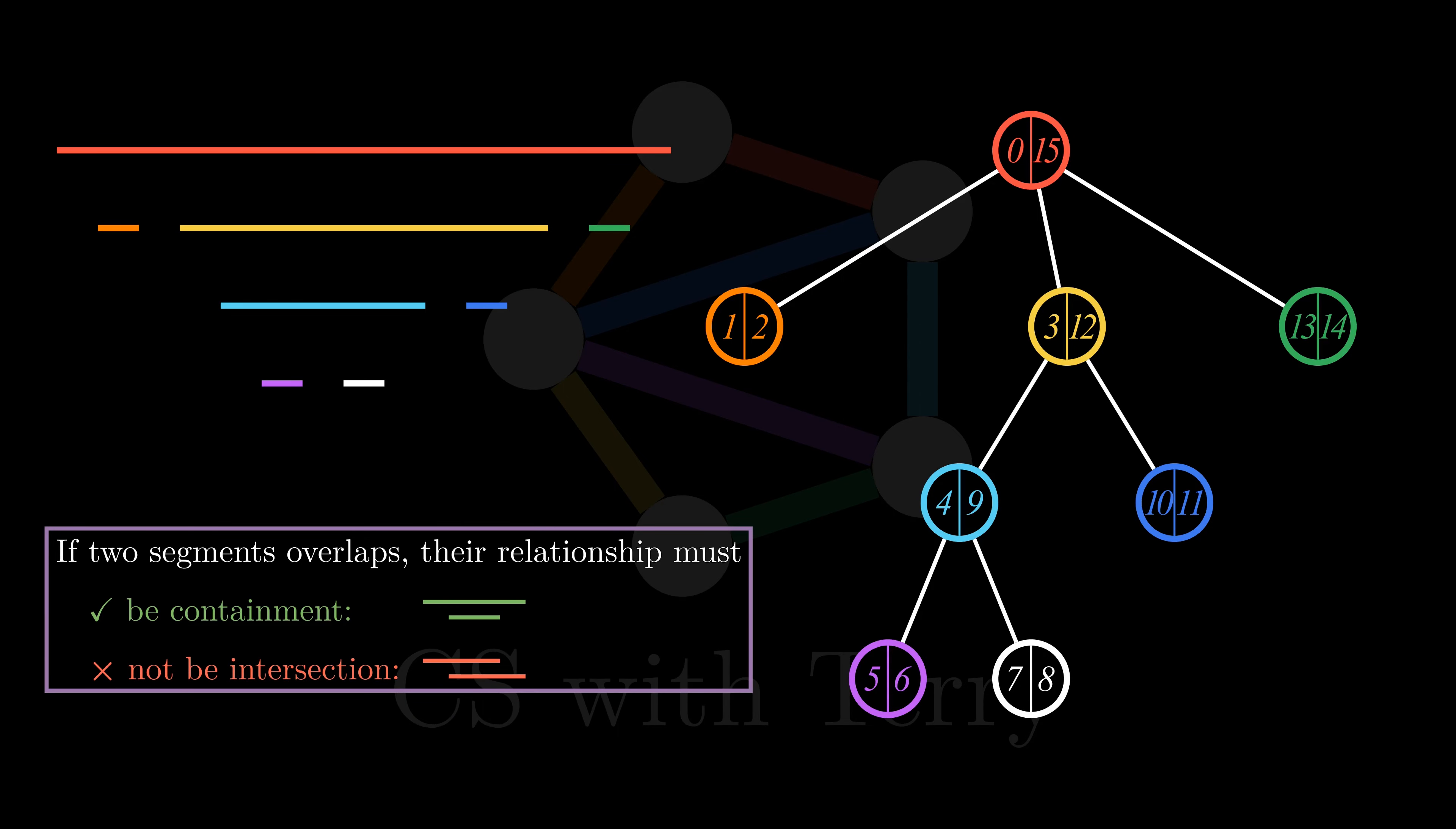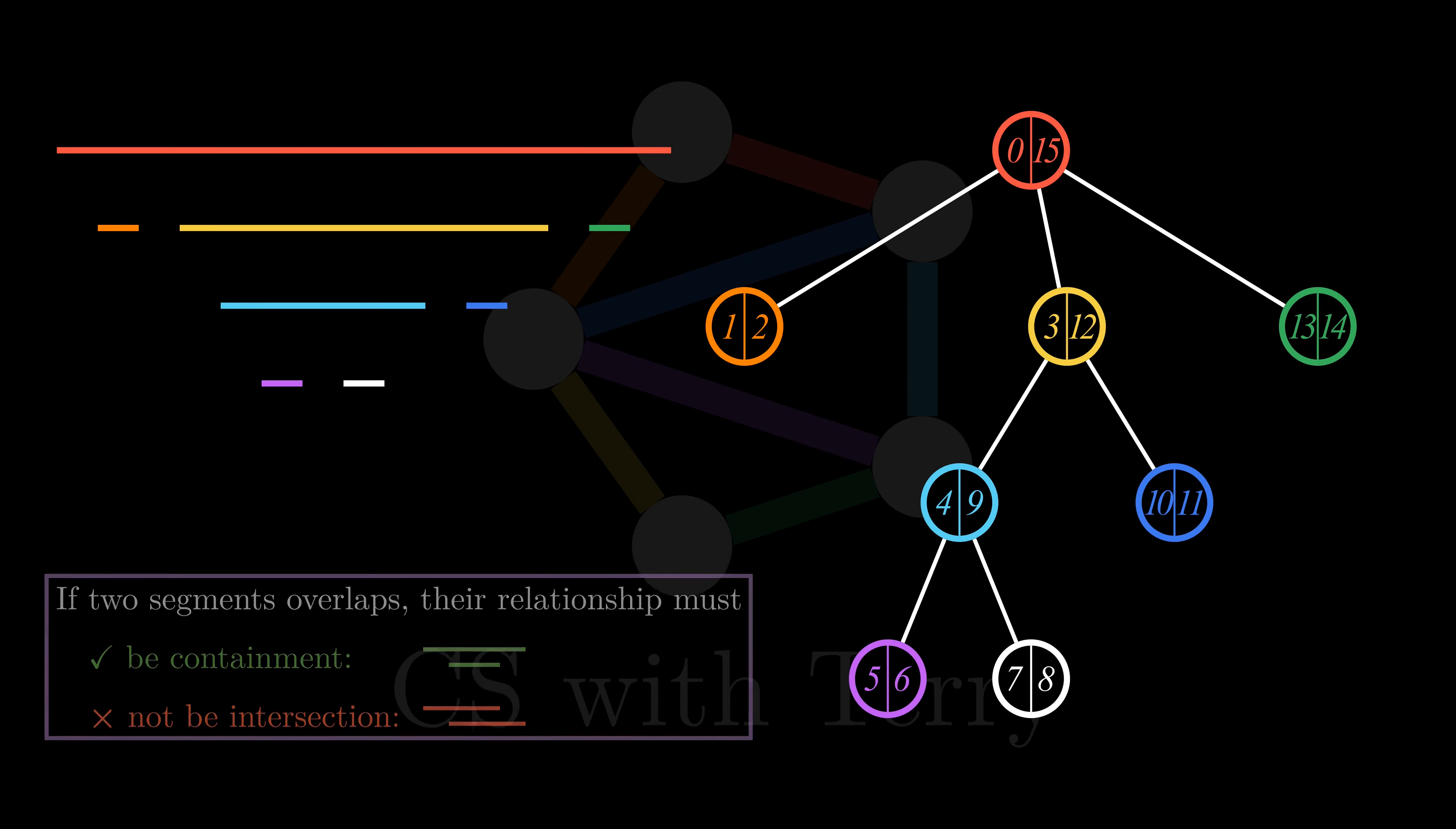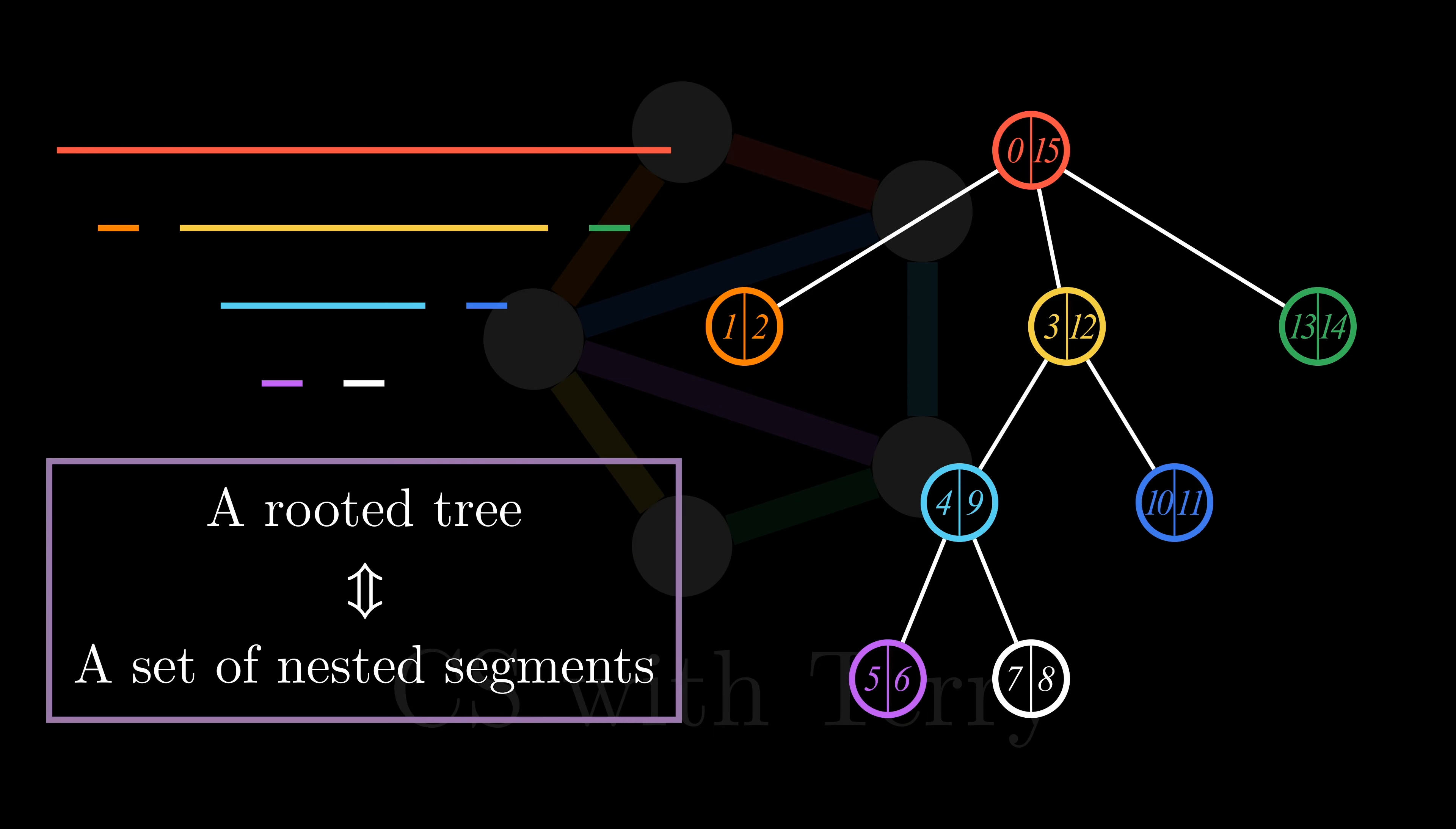What kind of properties between these line segments do we observe? We can observe that if two line segments have overlapping parts, their relationship can only be one of containment, but not intersection. The so-called containment relationship means that one line segment completely contains another line segment. The so-called intersection relationship means that although two line segments have overlapping parts, their front and rear endpoints are staggered. Therefore, we can conclude that a rooted tree is equivalent to a set of nested line segments. When we are judging whether A is an ancestor of B, we are in fact judging whether the line segment corresponding to A completely contains the line segment corresponding to B, which is why we can optimize its time complexity to O(1).